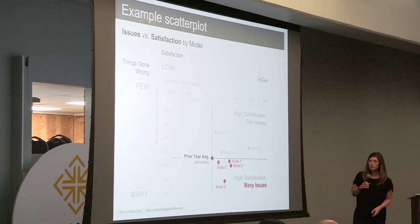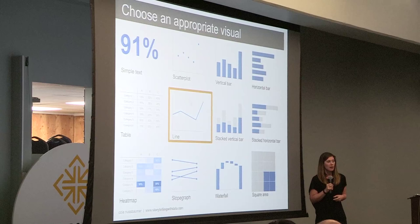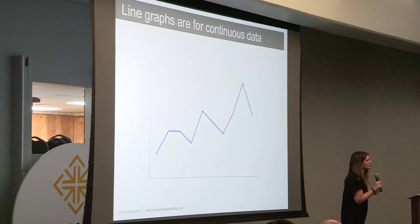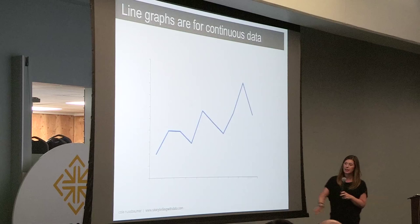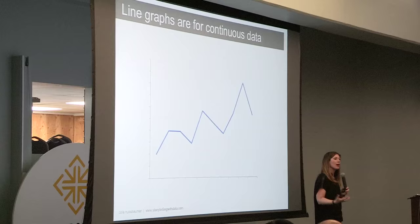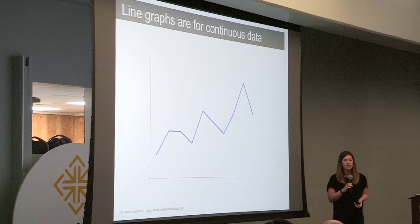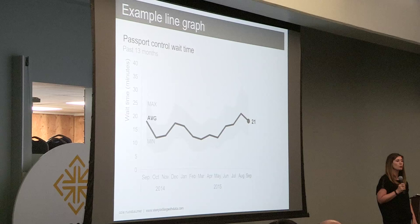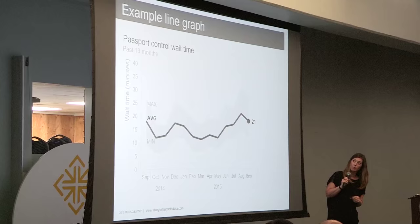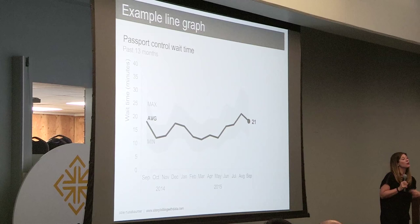If you have categories on your X axis, you're imposing a visual connection between them that probably doesn't make sense. The rule with line graphs: make sure you're plotting continuous data. For example, here is passport wait time for a West Coast airport — we can see the averages on a monthly basis over time. We've also plotted the minimum and maximum, so in addition to the average you also get an understanding of the variance over time. This can be useful if you're plotting a forecast and want to show confidence intervals — not just the point estimate.